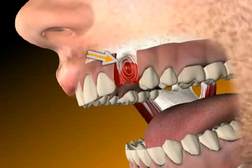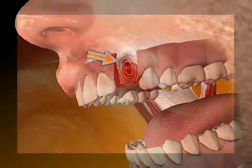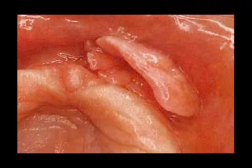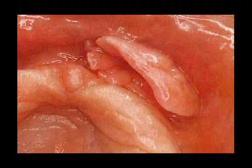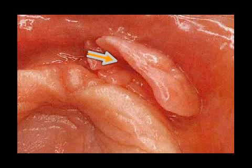The flabby ridge is not to be confused with the prosthesis-related irritation fibroma, which always develops in an ill-fitting prosthesis, as seen in this image. You can find out more in the video entitled Prosthesis-Related Irritation Fibroma.